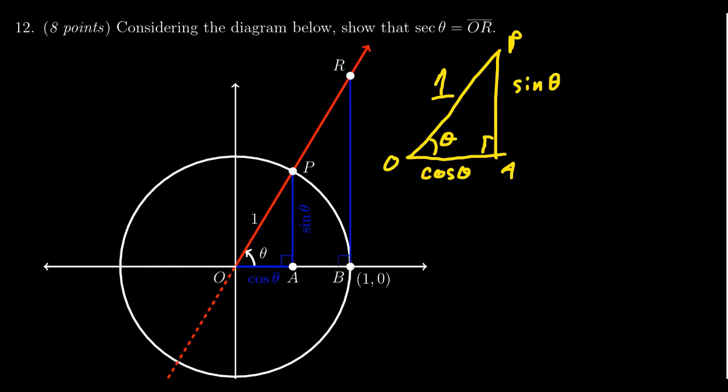The other triangle, we'll draw in blue, is triangle OBR. It has angle theta and is also a right triangle. Side OB, being the radius of the unit circle, has length one.